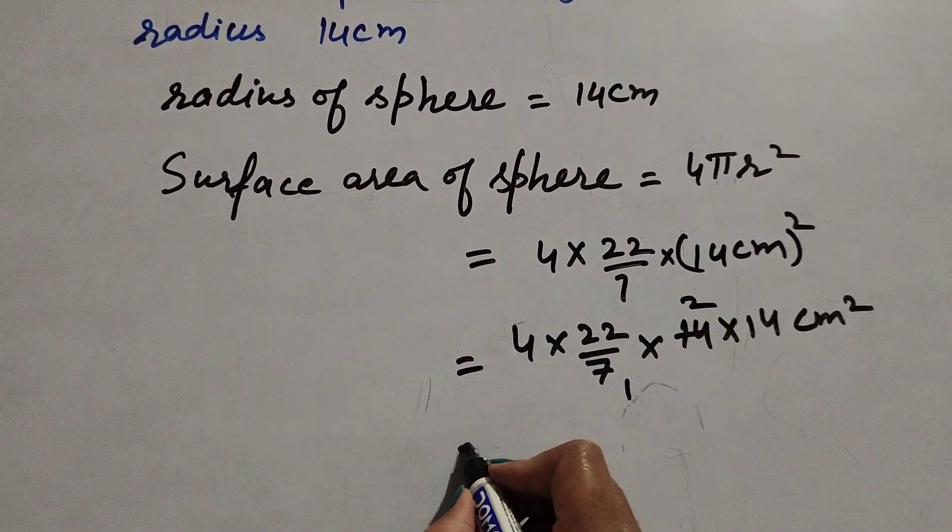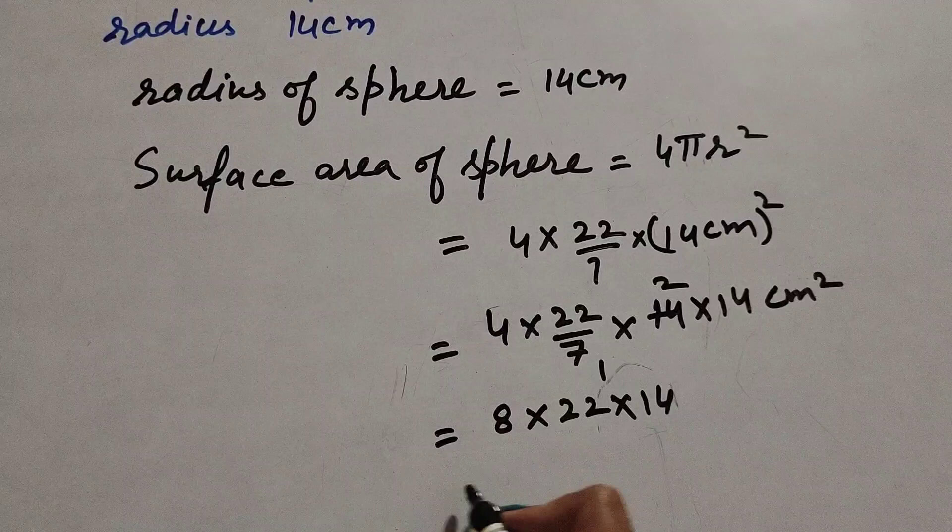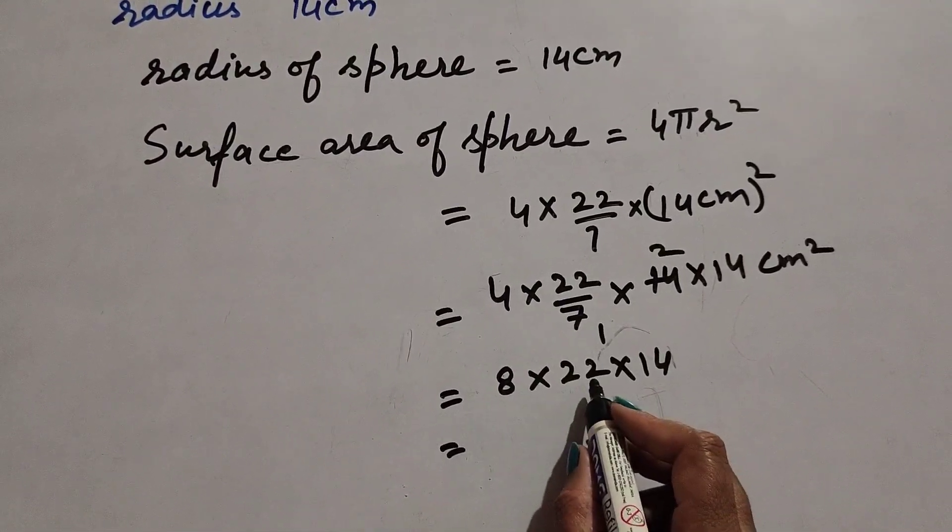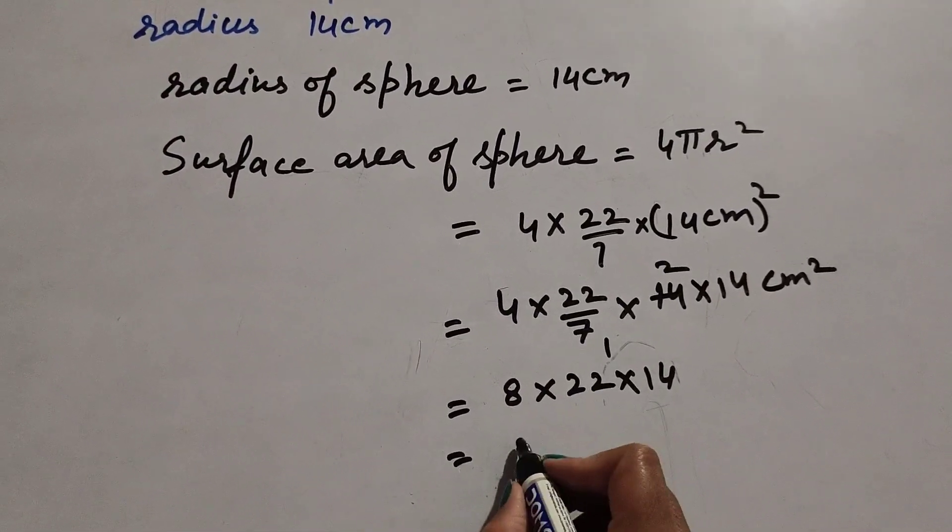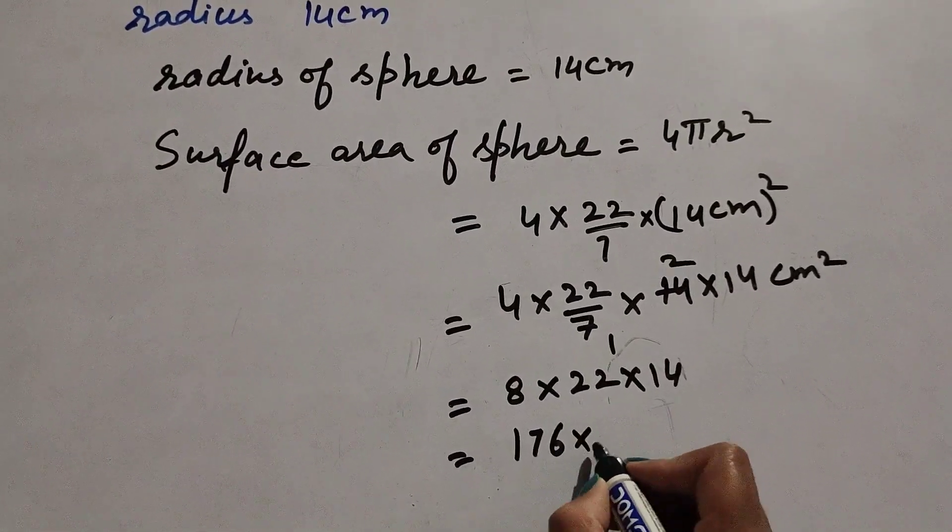This gives us 4 × 22 × 2 × 14, which is 8 × 22 × 14. So 8 × 22 gives us 176 × 14.